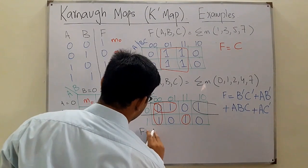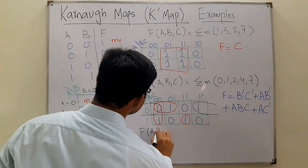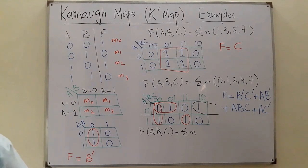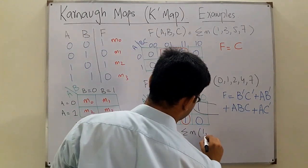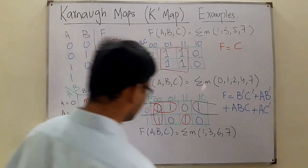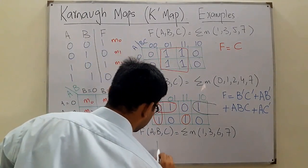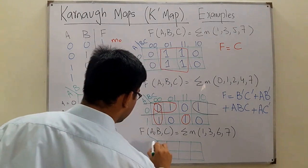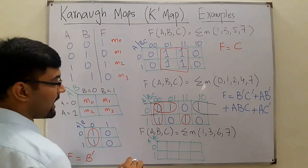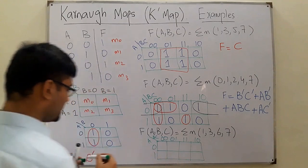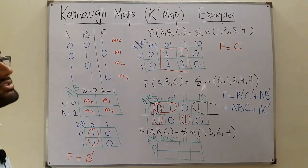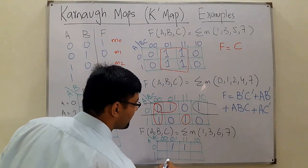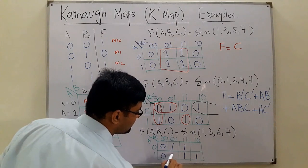Another three-variable example: f(A, B, C) equals summation of min terms 1, 3, 6, and 7. Always write out the Gray code sequence — 00, 01, 11, 10 — to reduce errors. m1 is high, m3 is high, m6 is high, m7 is high; the rest are zero.